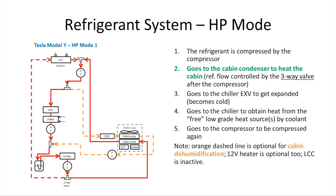This slide shows the heat pump mode of the refrigerant system. The refrigerant is compressed by the compressor, then goes to the cabin condenser to heat the cabin. This is controlled by the three-way valve after the compressor. The refrigerant then goes through the EXV to get expanded, then goes to the chiller to obtain heat from three low-grade heat sources via coolant, then returns to the reservoir and back to the compressor. The orange dashed line is optional for cabin dehumidification, and the 12-volt heater is optional too.